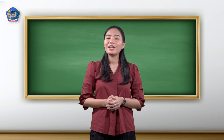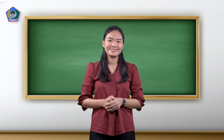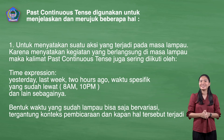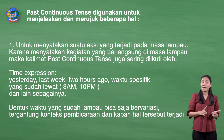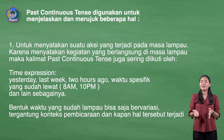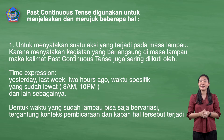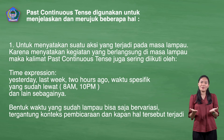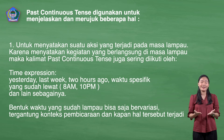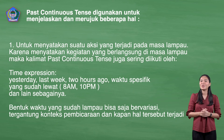Past continuous tense digunakan untuk menjelaskan dan merujuk beberapa hal. Yang pertama, untuk menyatakan suatu aksi yang terjadi pada masa lampau. Karena menyatakan kegiatan yang berlangsung di masa lampau, maka kalimat past continuous tense juga sering diikuti oleh time expression: yesterday, last week, two hours ago, atau waktu spesifik yang sudah lewat seperti 8 am or 10 pm, dan lain sebagainya. Bentuk waktu yang sudah lampau bisa saja bervariasi, tergantung konteks pembicaraan dan kapan hal tersebut terjadi.